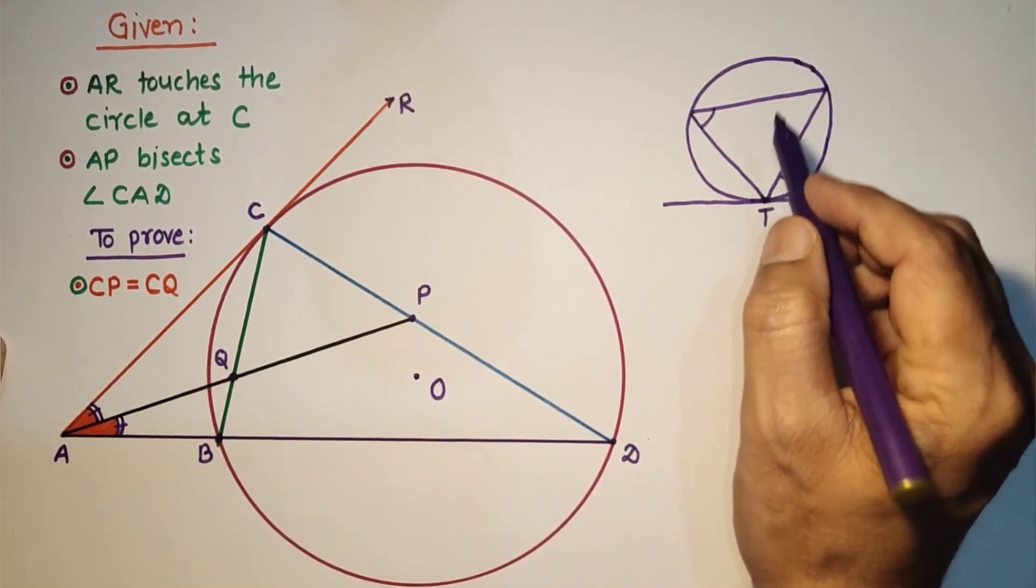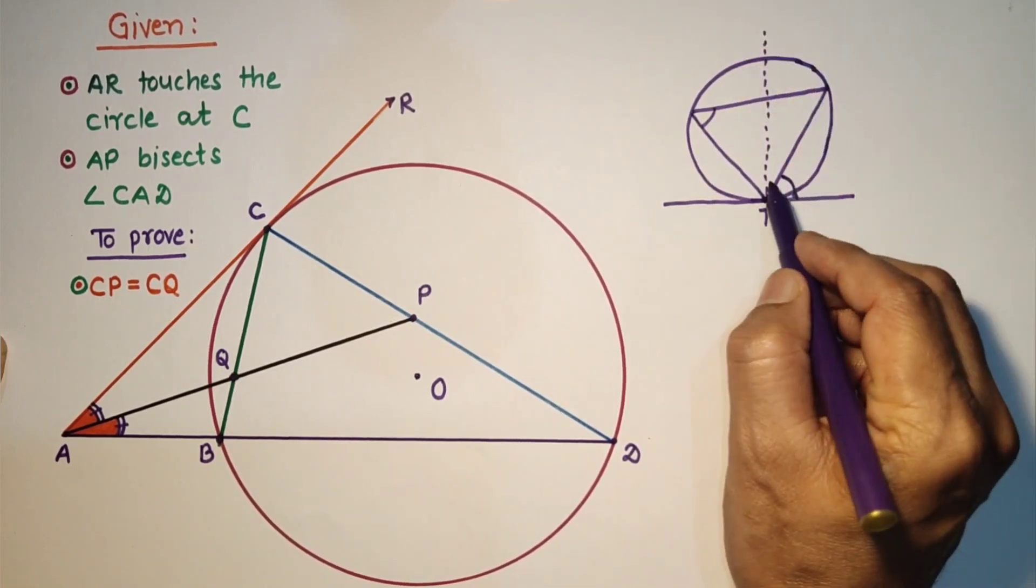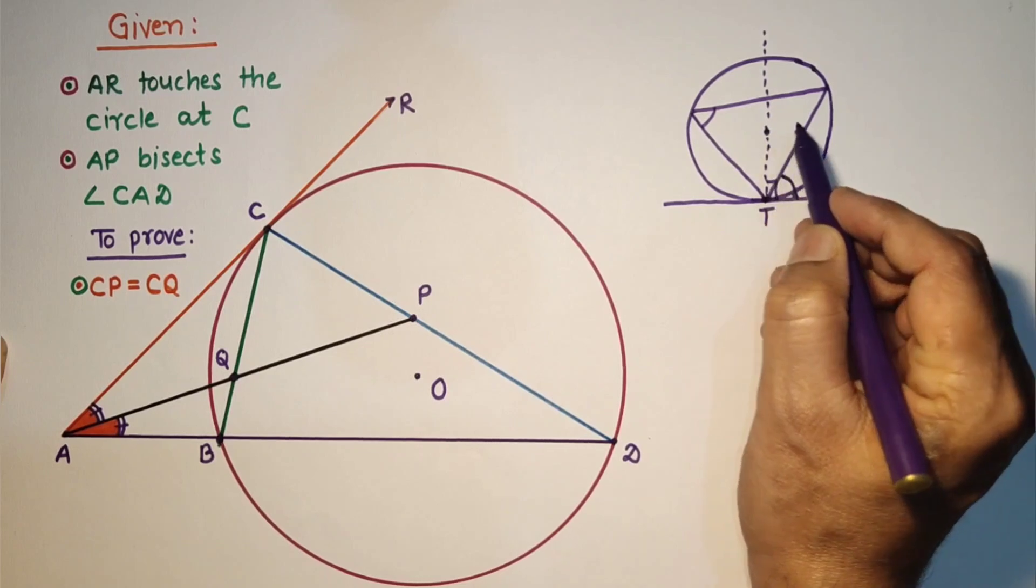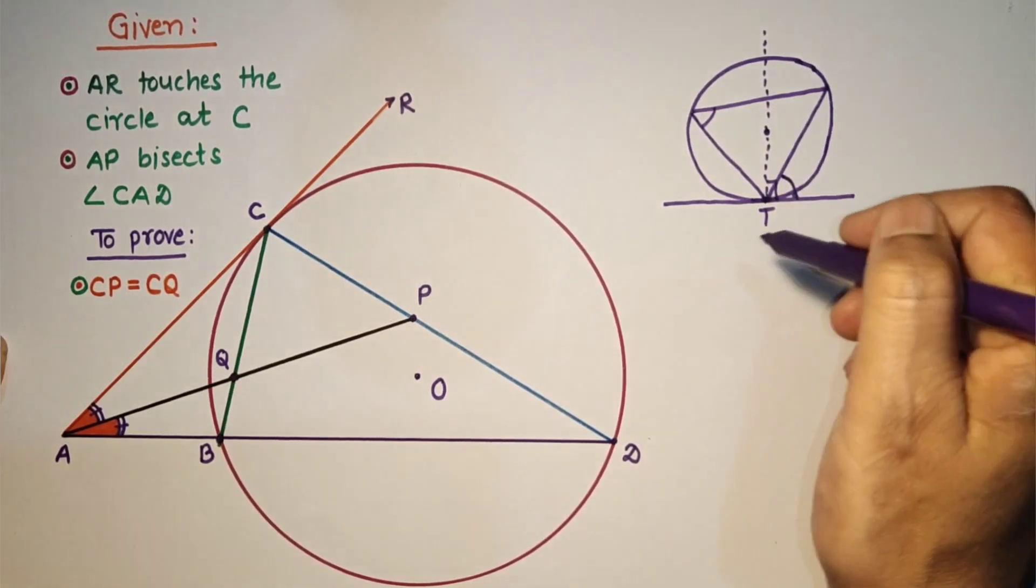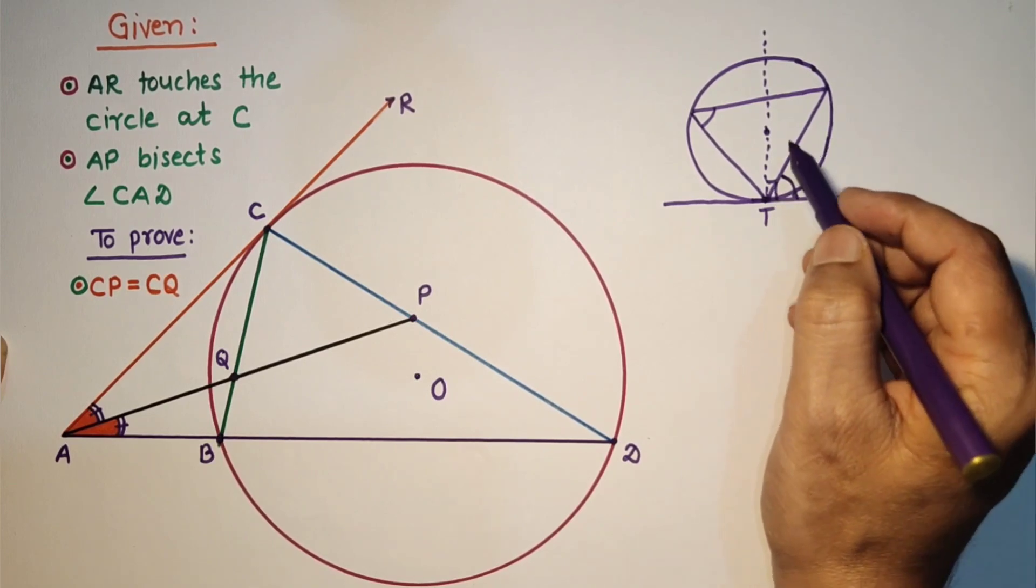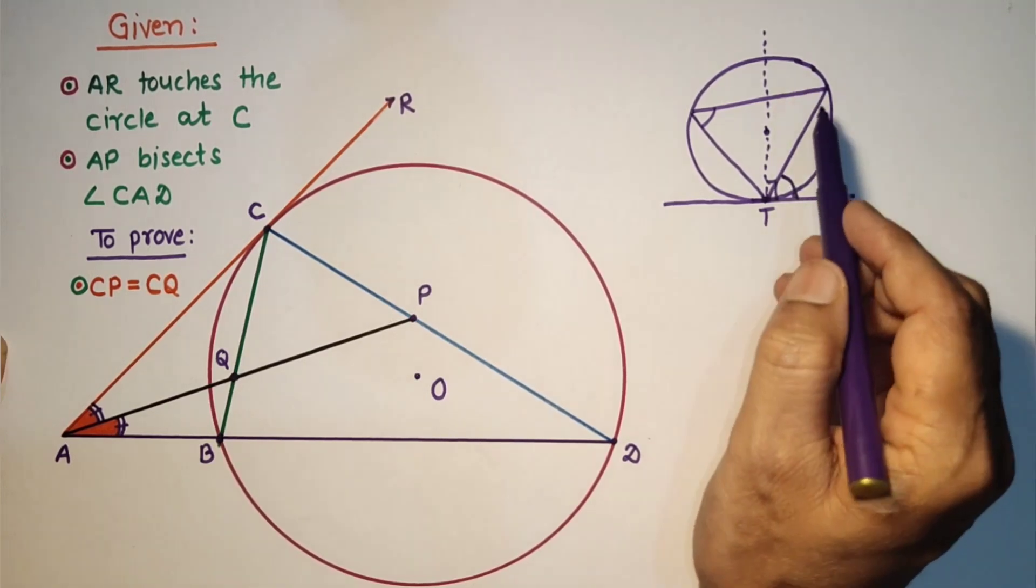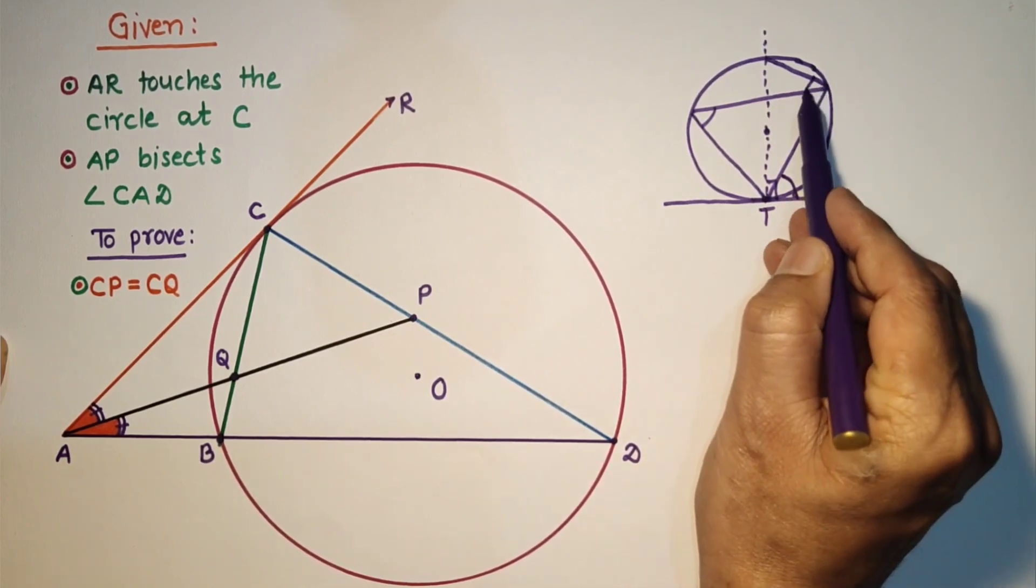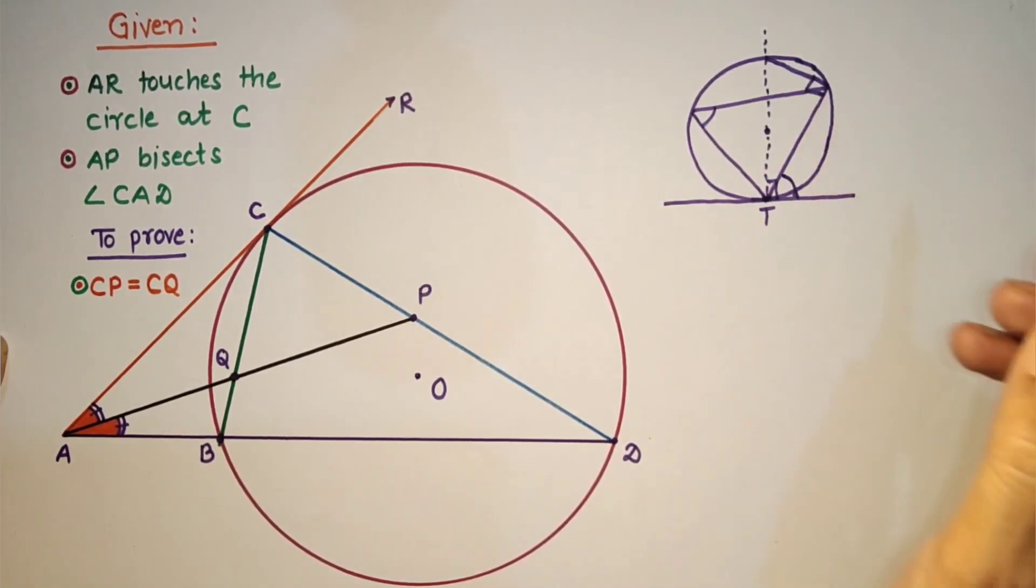Draw perpendicular. If we draw perpendicular this is 90 degrees. This will pass through the center as radius and tangent at the point of contact will be perpendicular. If we join this, this will be 90 as this is diameter. Diameter subtends 90 degrees.